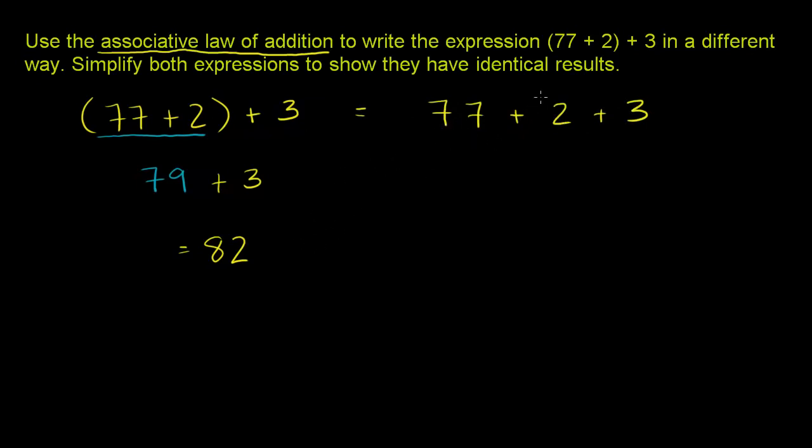But the associative law tells us I could do 77 plus 2 plus 3. I could add this first and then add it to 77. And it's going to be the exact same thing as if I add these two guys first and then add the 3. And let's verify that for ourselves.